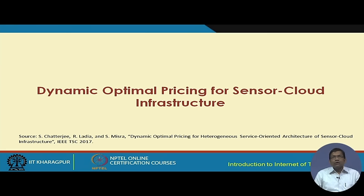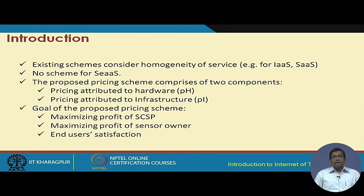The third issue is pricing in sensor cloud. This is taken from a paper published in IEEE Transactions on Services Computing in 2017, where we examine the issue of pricing in sensor cloud and propose an optimal pricing mechanism that is also dynamic in nature — the pricing itself changes dynamically. In existing cloud models using IaaS, SaaS, and PaaS, pricing schemes deal with homogeneous services, and there is no pricing scheme for sensors as a service.